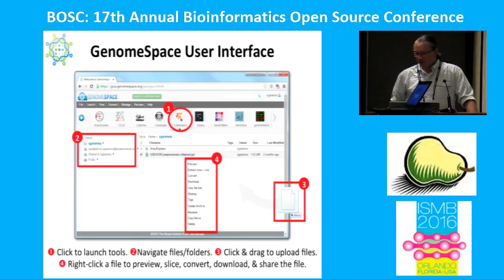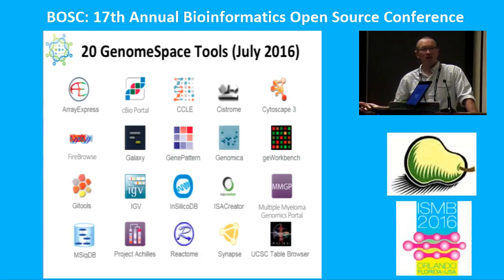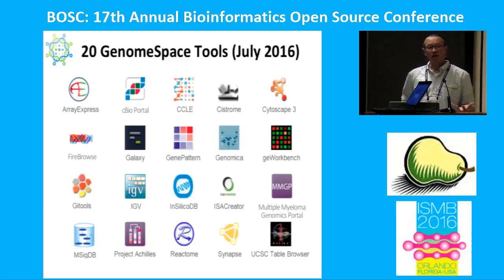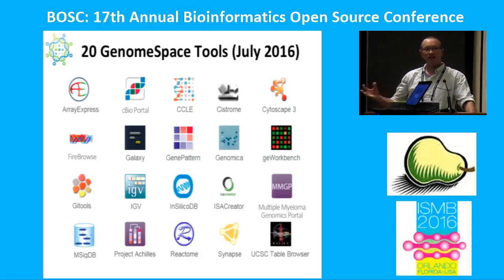As for the tools that are available, we have approximately 20. They run the gamut through visualization tools — there's Cytoscape for looking at networks, IGV for anything aligned to a sequence. We have data sources including Firehose where you can get all the data from TCGA, InSilicoDB which gives access to all the GEO datasets and ArrayExpress. And we also have workflow engines like Galaxy, GenePattern, and GE Workbench, each of which has tens to hundreds of different analyses built within them.